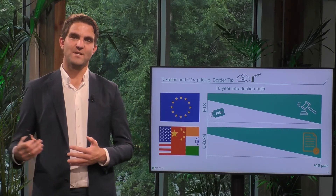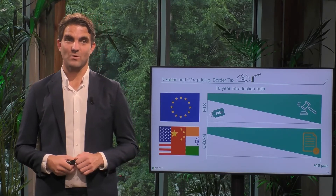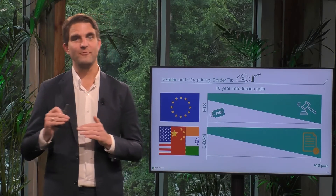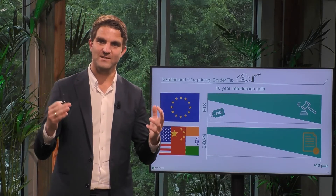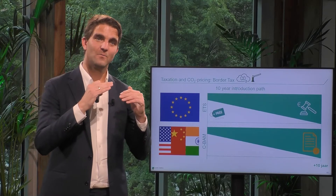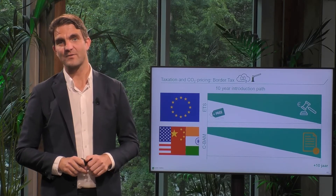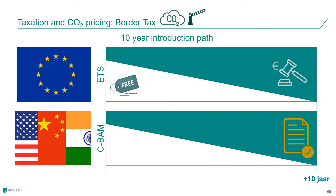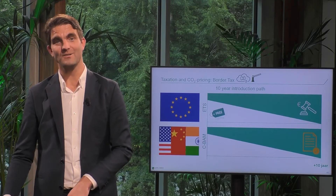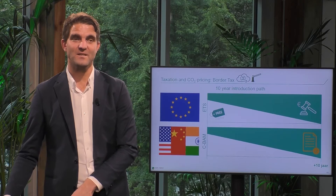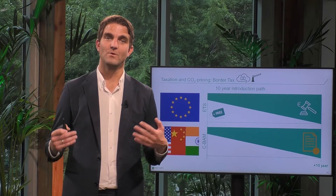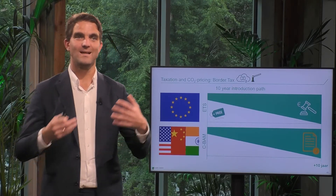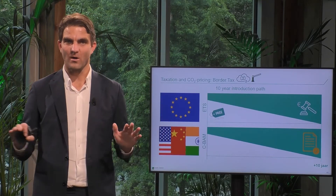There is a 10-year introduction path associated with this CBAM. The mechanism is proportional to free allocation. So, let's say in a specific industrial sector under the ETS, a company currently gets 80% of allowances through free allocation and 20% via auctioning. In that case, the non-EU competitor would have to buy a CBAM certificate for just 20% of its emissions — and that introduction path grows to 100% over 10 years. Only after those 10 years would the non-EU producer have to buy CBAM certificates for all its emissions, and the European competitor would no longer receive free allowances.